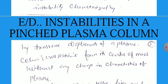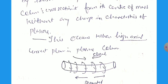Due to the flow of plasma and the transverse magnetic field, the shape and size of the plasma column changes, the plasma column is bent, without changing any characteristics of the plasma, like this figure. This occurs when high axial current flows in the plasma column.